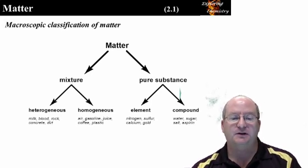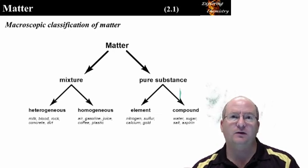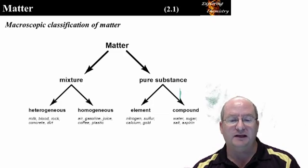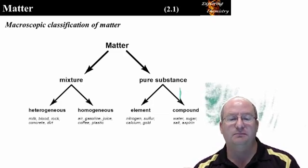Now looking at pure substances, these contain only one chemical entity. Elements are comprised of only one type of atom, and compounds are comprised of different atoms bonded together.